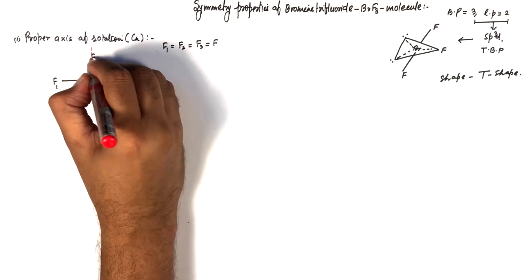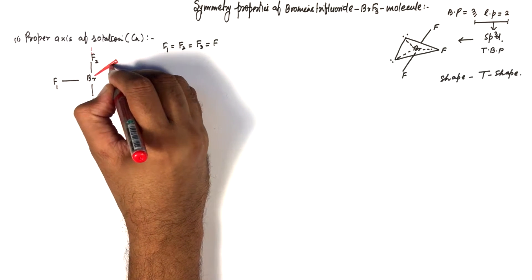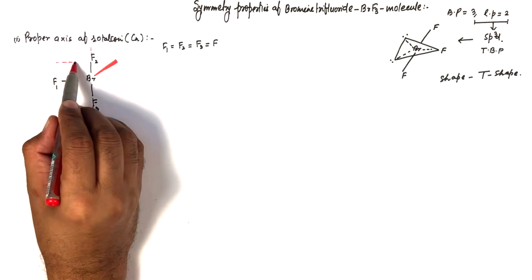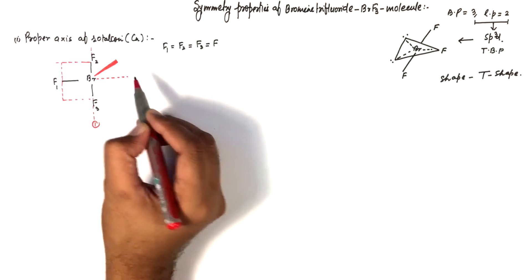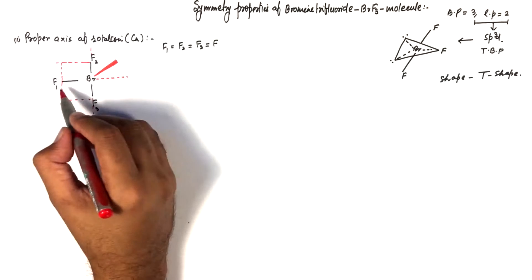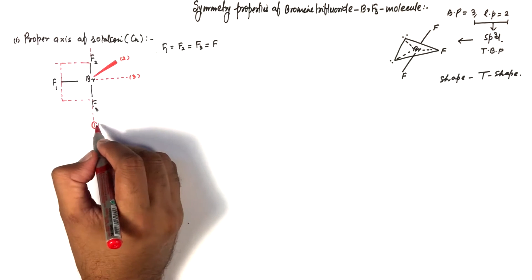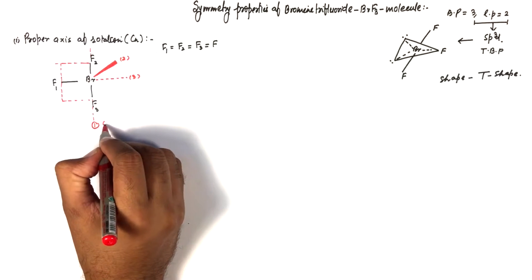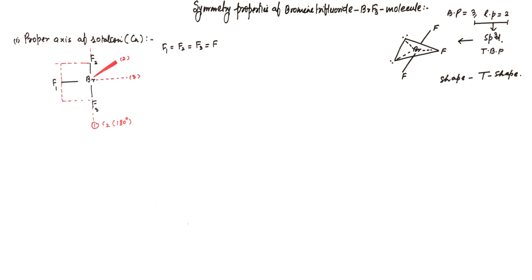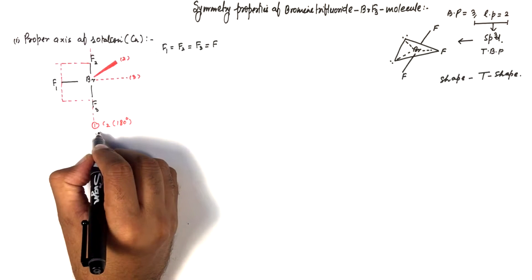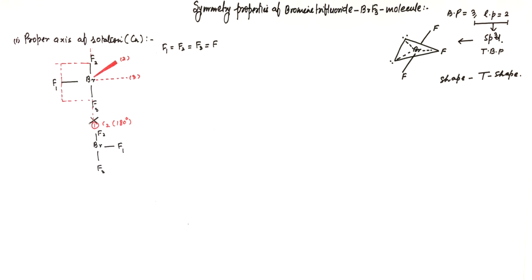Axis number one passes along one direction. Axis number two passes through the bromine atom and is perpendicular to the molecular plane. When we perform the C2 operation — rotation by 180 degrees — about axis number one, we get a new configuration that is not equivalent to the original one. So axis number one is not a proper axis of rotation. The same result occurs with axis number two.